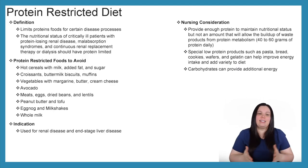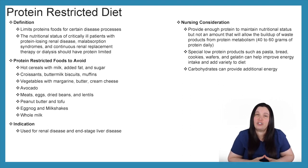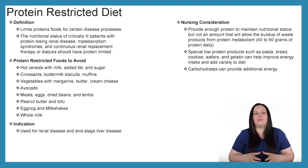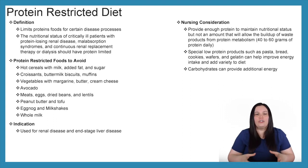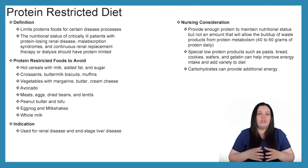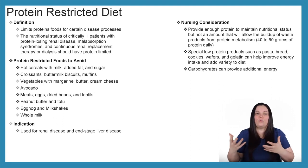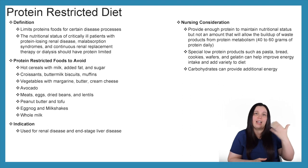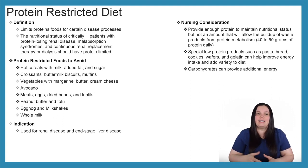Protein restricted diets are seen with renal disease and end-stage liver disease patients, as they limit protein foods for certain disease processes. Critically ill patients with protein-losing conditions, renal dialysis, malabsorption syndrome, and continuous renal replacement therapy such as CRRT should have protein-limited diets.